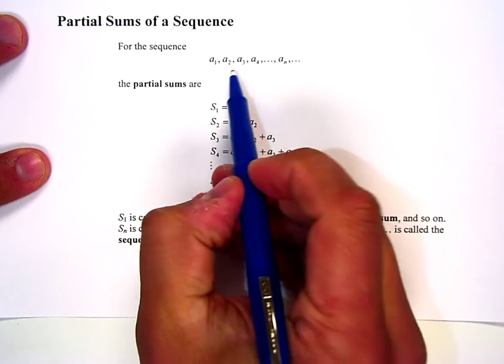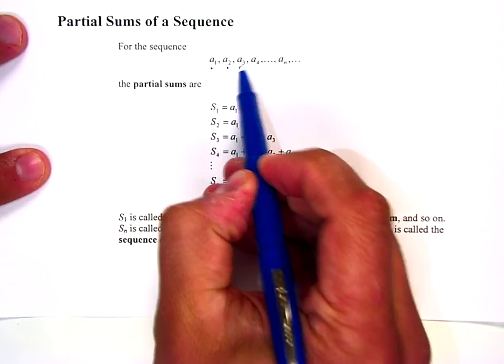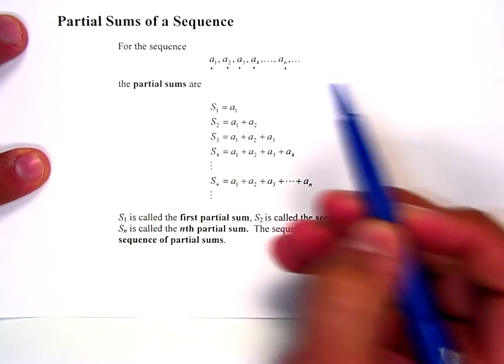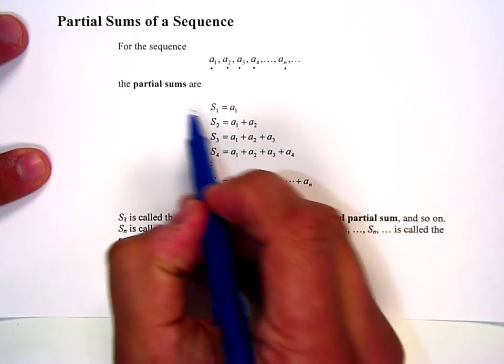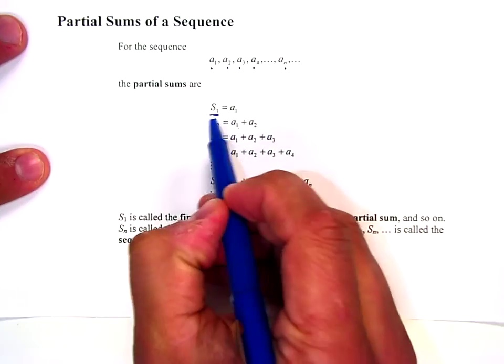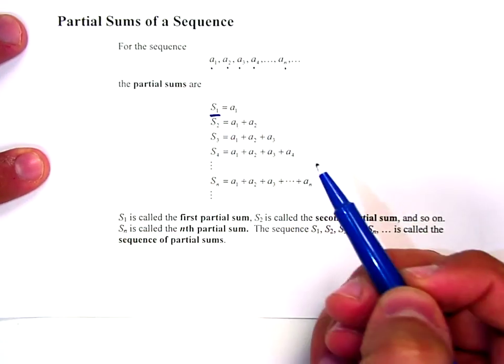And so you can see here, if I have a sequence a sub 1, a sub 2, a sub 3, a sub 4, all the way to a sub n, and so on and so on, the partial sum, or s sub 1, is a1, that's it.